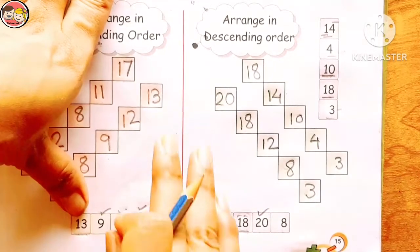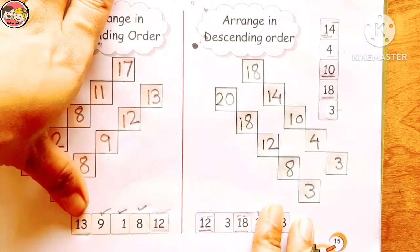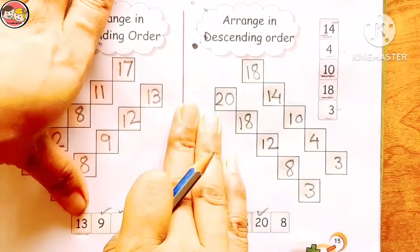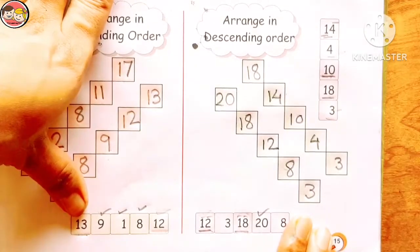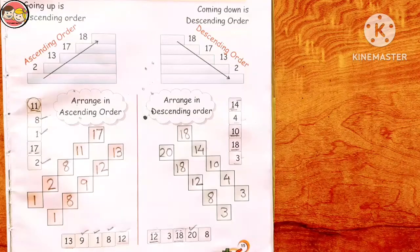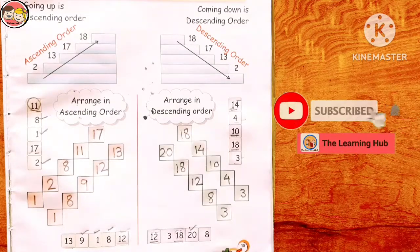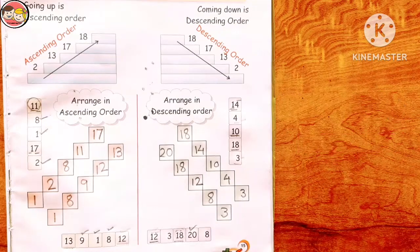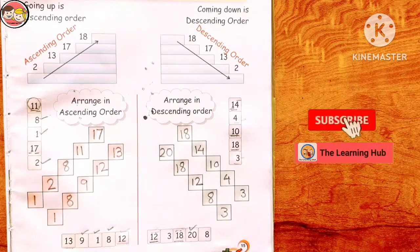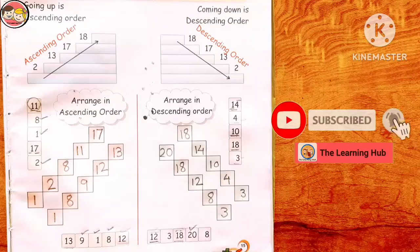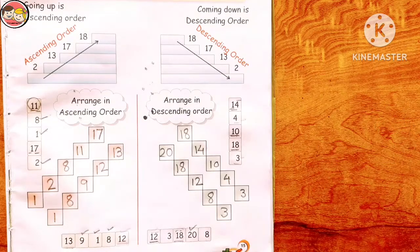Descending order means coming down or arranging numbers from biggest to smallest. So children, I hope today's concept is clear to everyone and you all liked today's topic. It's a very important and conceptual topic. So keep learning and keep smiling. Thank you everyone. Bye-bye.